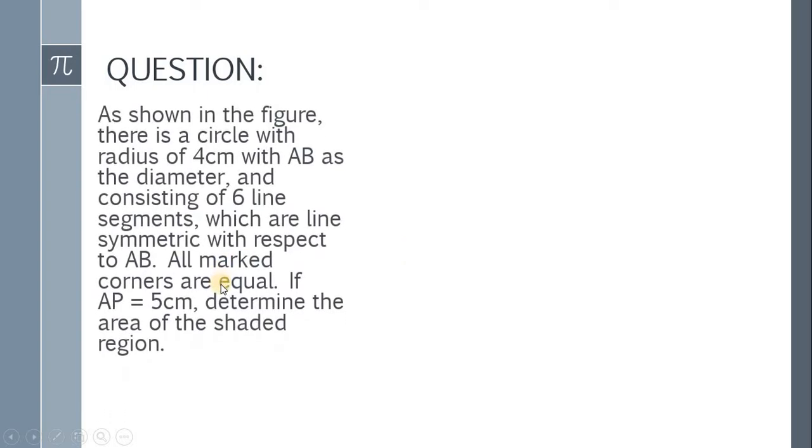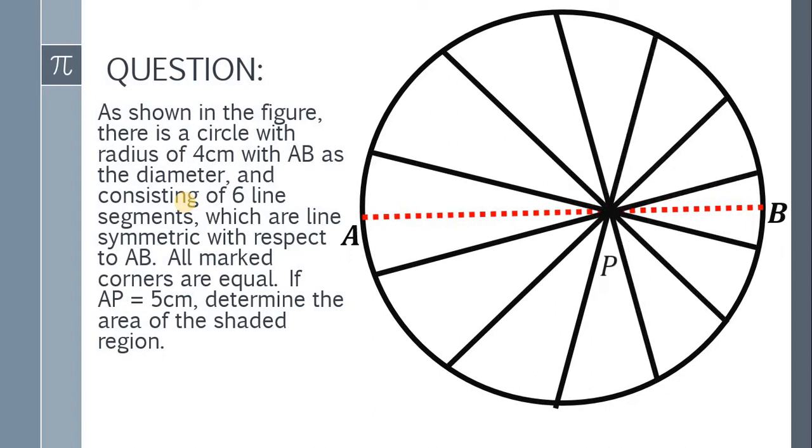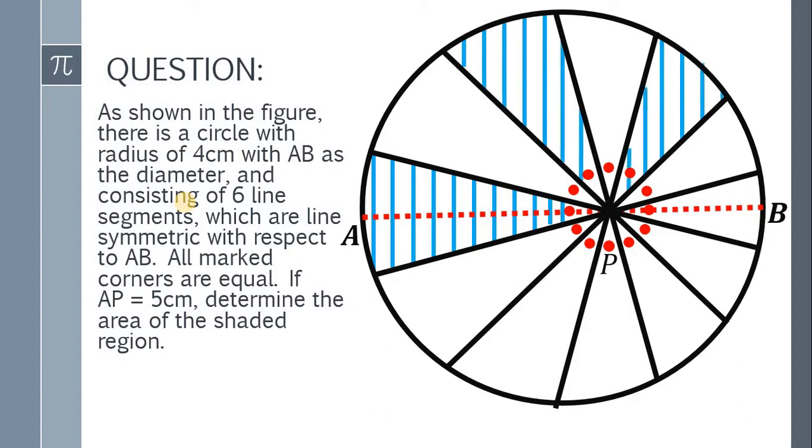Here's the question. As shown in the figure, there is a circle with radius 4 cm with AB as a diameter and consisting of 6 line segments, which are line symmetric with respect to AB. All marked corners are equal. If AP equals 5 cm, determine the area of the shaded region.